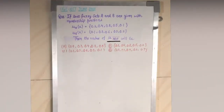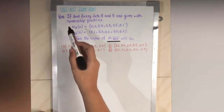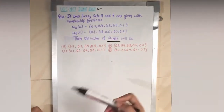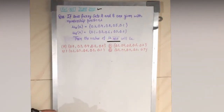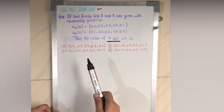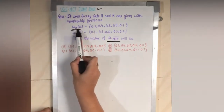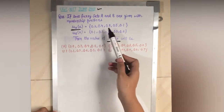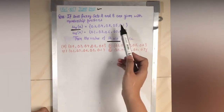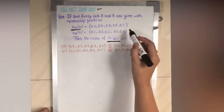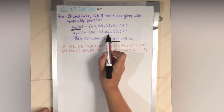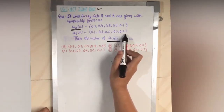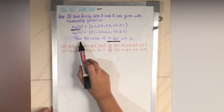Hey everyone, Vandana here. Today we are going to solve a question based on fuzzy sets. This question was asked in UGC Net June 2012. The question says: if two fuzzy sets A and B are given with the membership functions — membership of A on X is 0.2, 0.4, 0.8, 0.5, and 0.1, and membership of B on X is 0.1, 0.3, 0.6, 0.3, and 0.2.